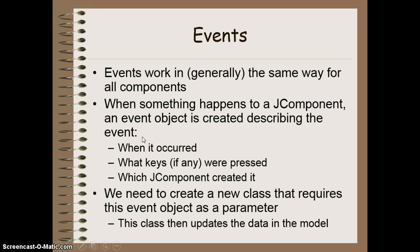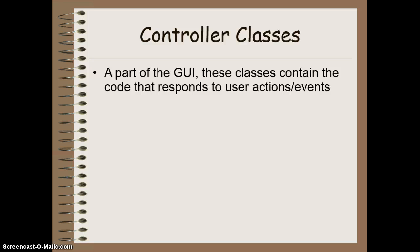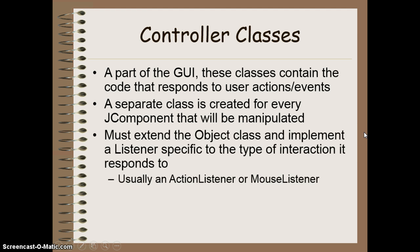This class is then going to figure out how to update the data in the model. The model will then tell the view to update its overall view of what's going on with the data. This class — or set of classes — is called controller classes. These are part of the GUI and they contain all the code that's going to respond to a particular event that occurs. We're going to make a separate controller class for every JComponent that we're going to manipulate. We must extend the object class and implement a listener specific to the type of interaction we're looking for — so the controller class extends Object and implements either ActionListener or MouseListener depending on what we want to do.